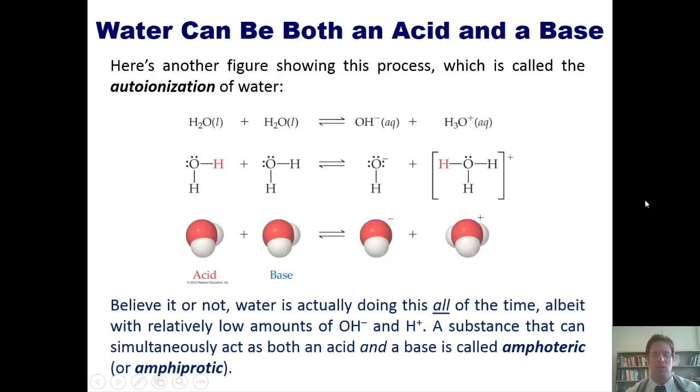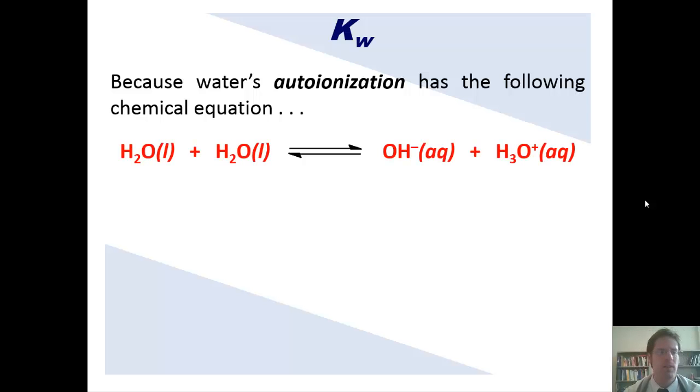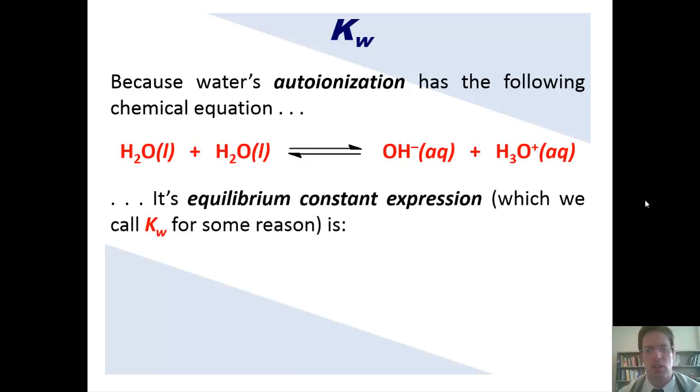Believe it or not, water is actually doing this all the time, albeit with relatively low amounts of hydroxide and H+. A substance that can simultaneously act as both an acid and a base is called an amphoteric or amphiprotic substance. Now, because water's autoionization has the following chemical equation, its equilibrium constant expression, which we call KW for some reason, because we want to have as many different and confusing kinds of Ks as possible, is this.